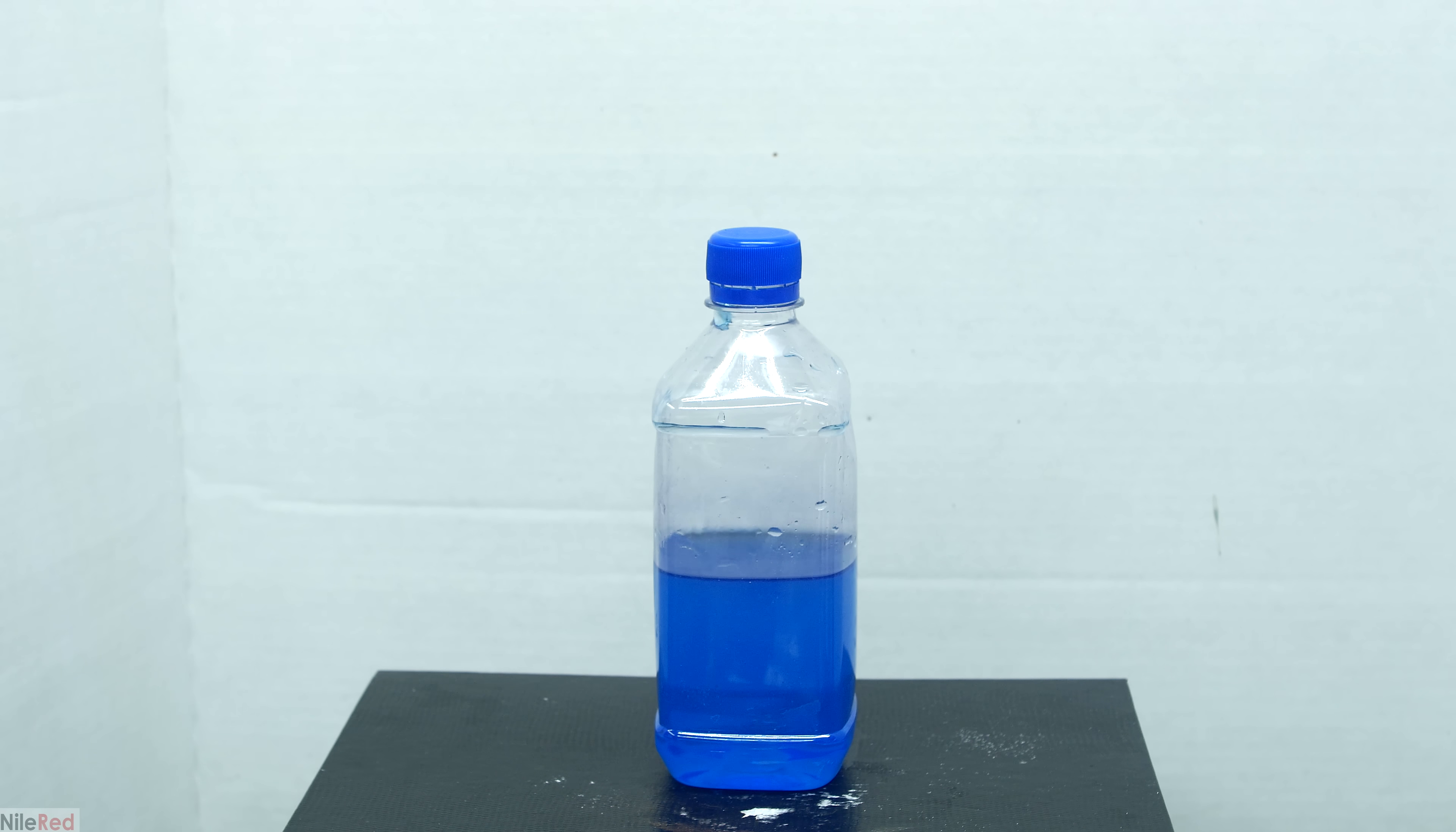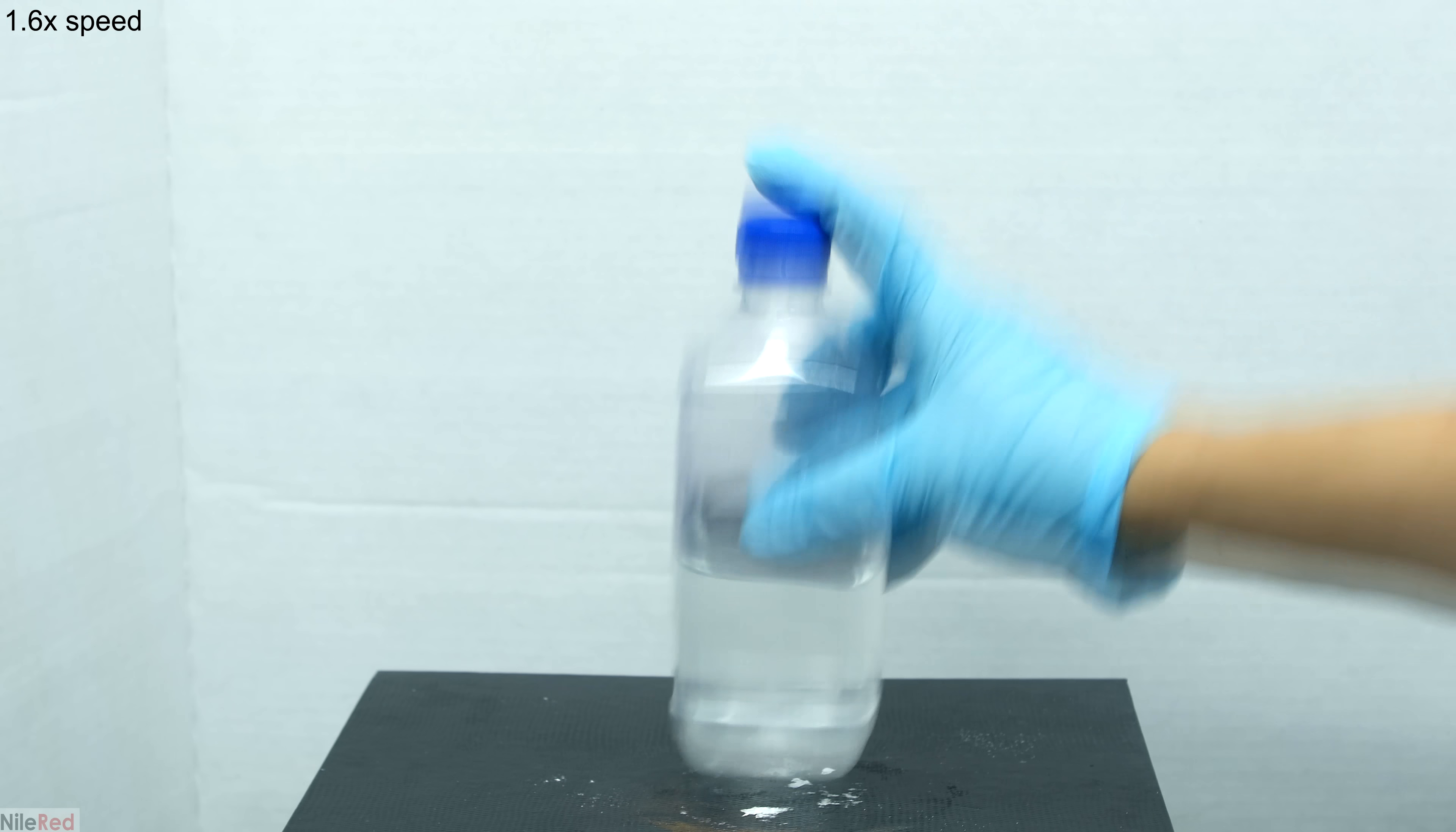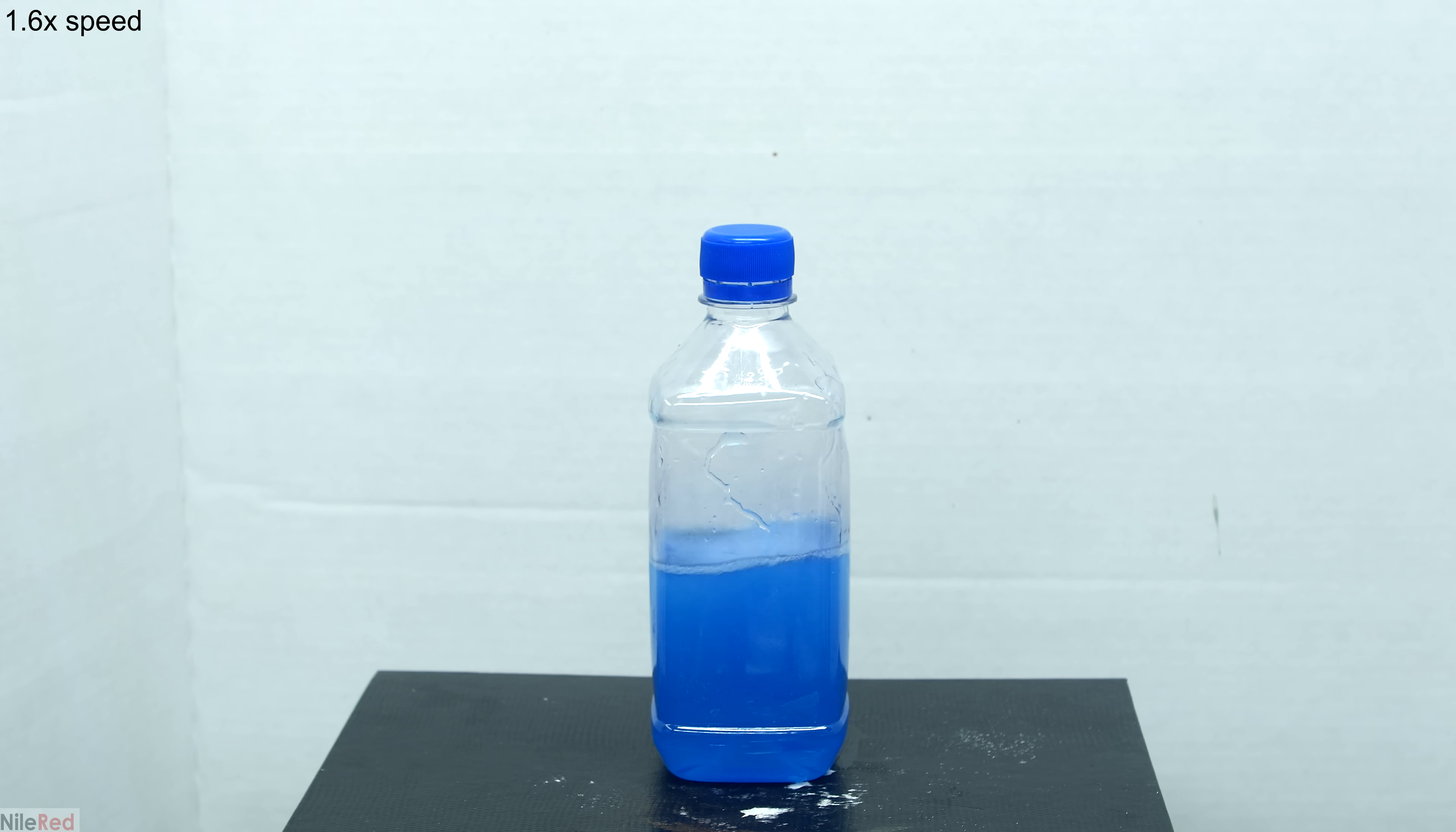As we let the container sit here for a little bit the blue color starts to fade and we're left with a colorless solution again. The cycle of shaking the bottle to make it turn blue and then waiting for it to revert back to colorless can be repeated several times. So this obviously isn't magic and we're going to talk a little bit about what's going on here.